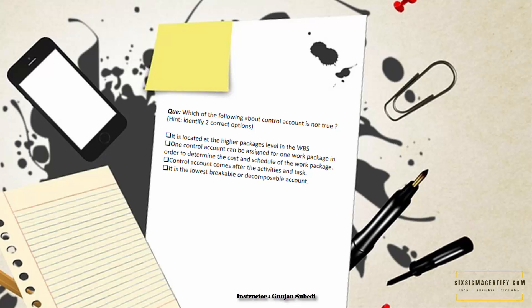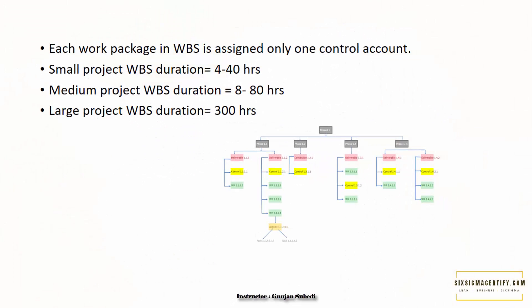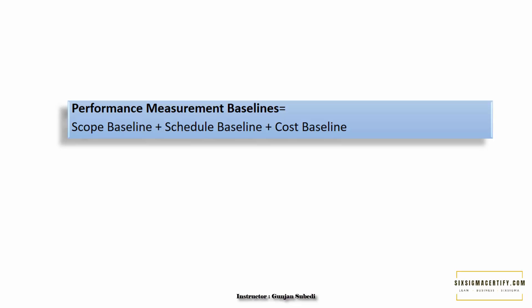Activities and tasks come from breaking down work packages. Depending on the type, duration, and complexity of projects, we may have different kinds of work packages. For small projects, WBS work packages generally have a duration of 4 to 40 hours. For medium projects, it is 8 to 80 hours. For large projects, WBS work package duration is around 300 hours.